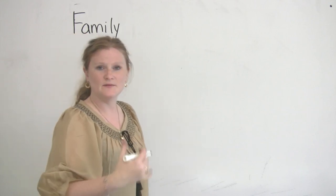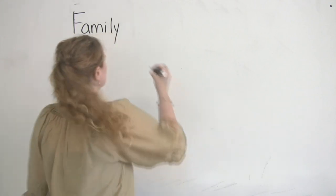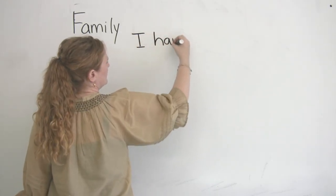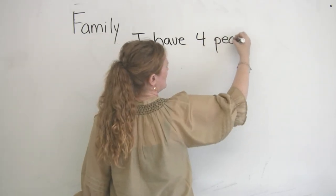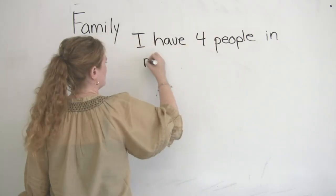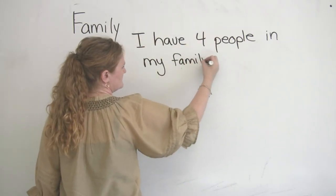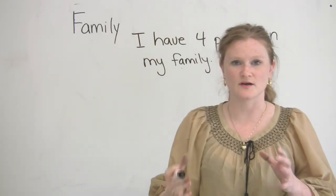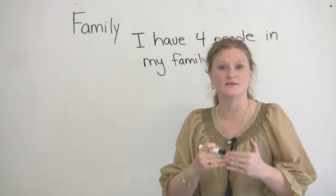For example, if someone asked me how many people are in your family, my answer would be four. So I can say, I have four people in my family. Now, in English when we talk about people in our family, we mean the people that live in the same house.